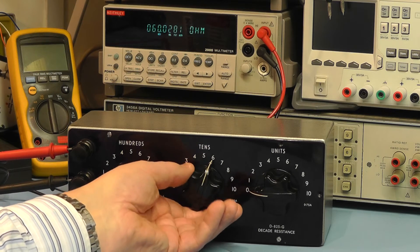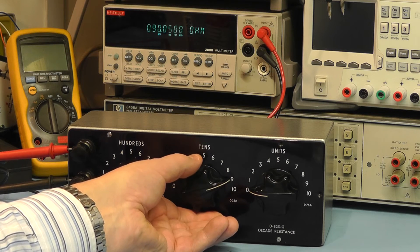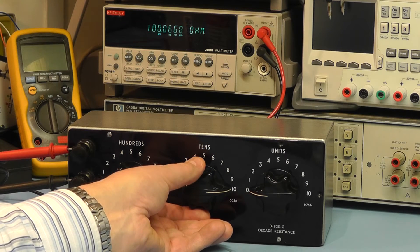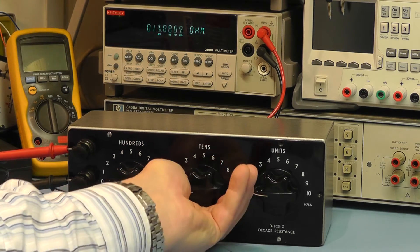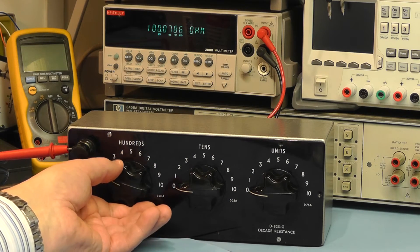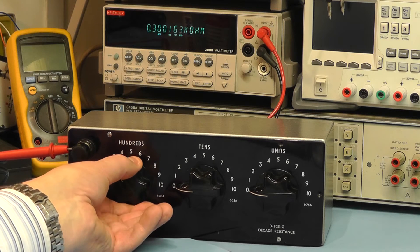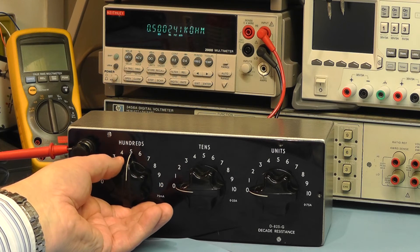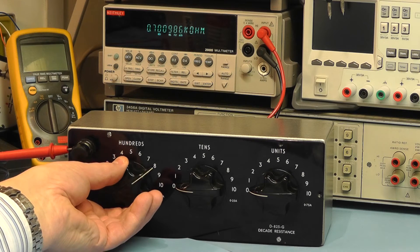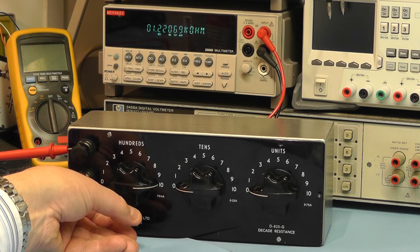Fifty, in fact anything above now I think it's reading more or less spot on. Look there, 100 ohms is 100.06. And we'll check the hundred switch: 100 ohm is reading 100 ohm, 200, 300, 400, 500, 600, 700, 800, 900, and 1000 ohms.